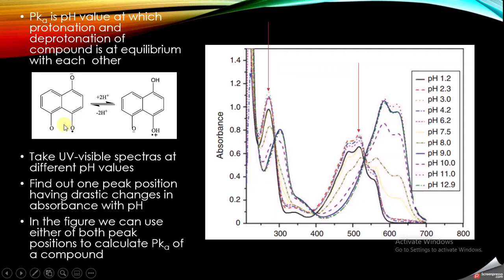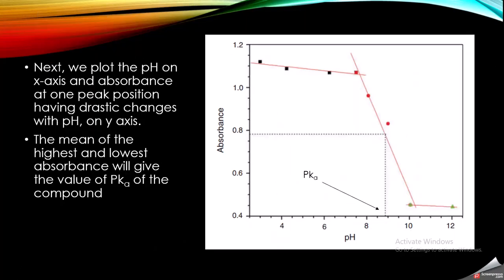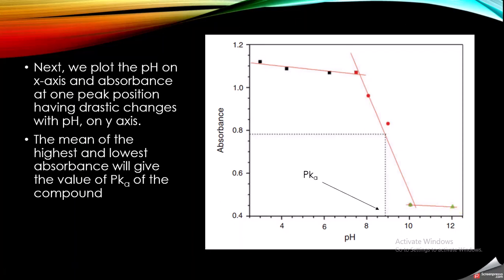Once we have this data in table form, the next step is to plot a graph. We plot the absorbance values on the y-axis and the corresponding pH values on the x-axis. You can see the absorbance was decreasing slightly as pH increased, then there was a slight change, and at higher pH values it becomes almost constant.